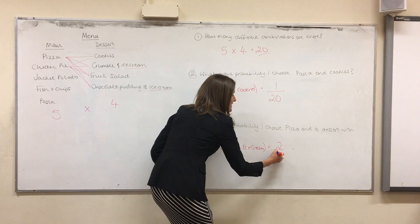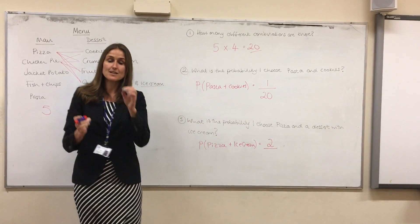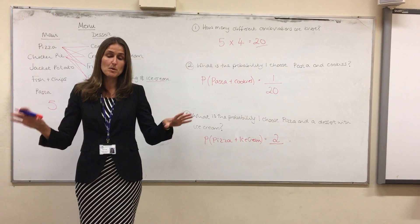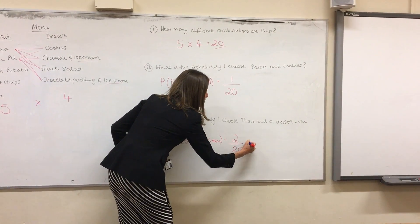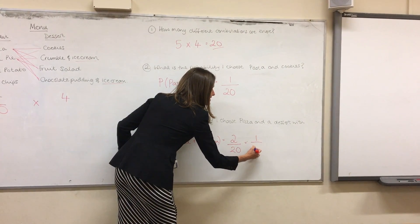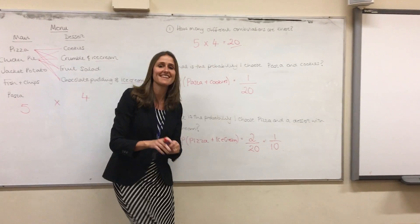So I've put the number of ways on the top. And again, the denominator is always the number of total possible outcomes, which is twenty. And of course I can simplify that down to one over ten. Thank you.